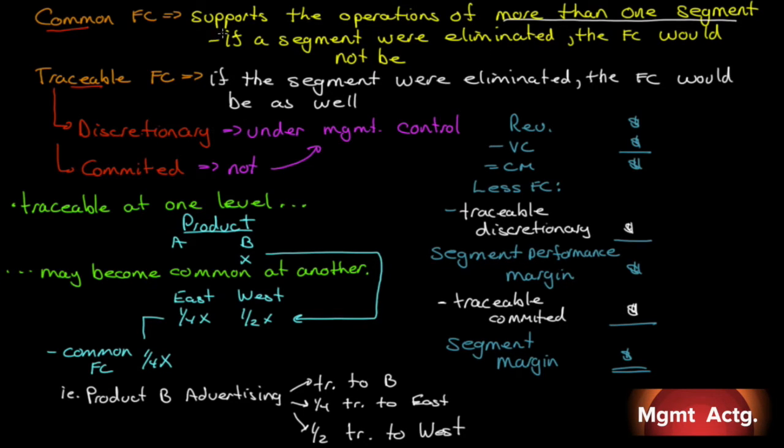So they are not assigned to segments. Now there's some discussion among management accountants that say there should be some allocation of the common costs to the segments because the segments, if all the segments were to disappear, all the common costs would disappear.